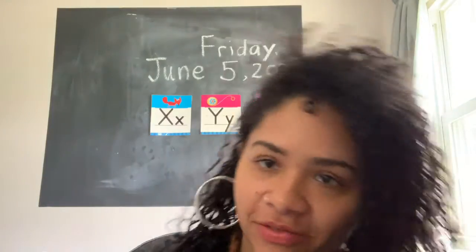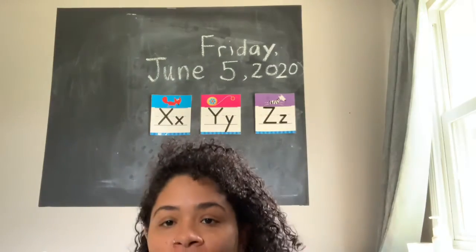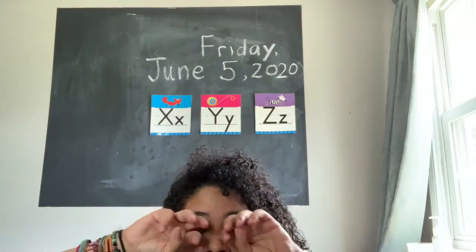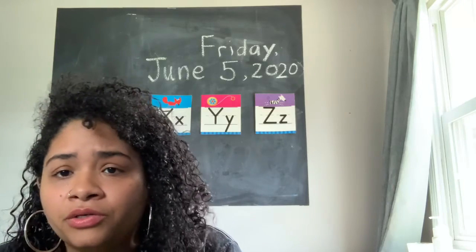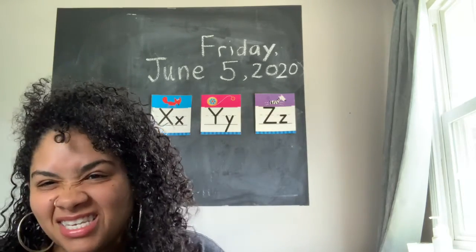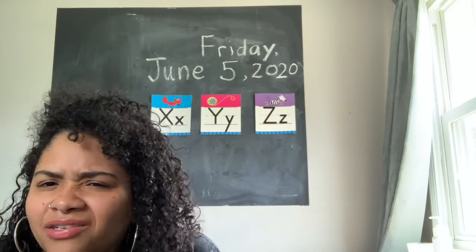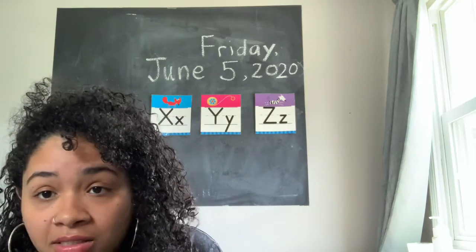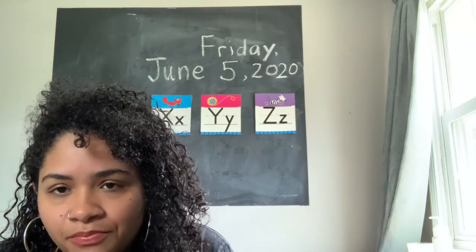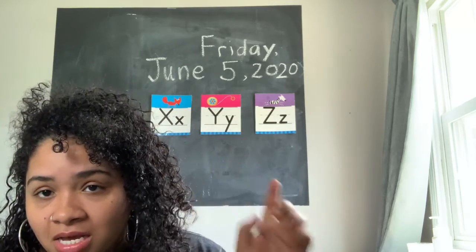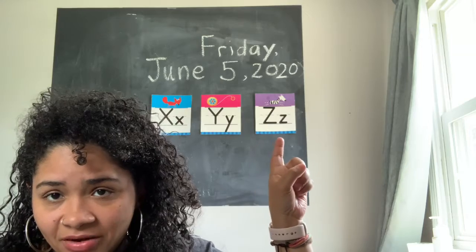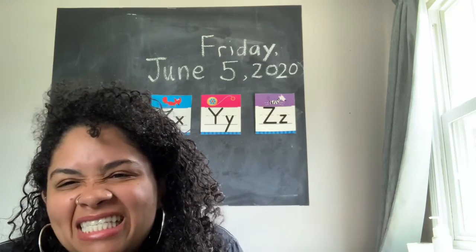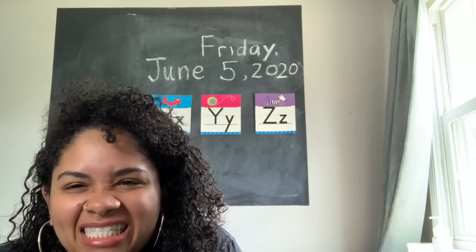Hi boys and girls, it's me, Miss Nicole. Today is Friday, June 5th, 2020, and today we're going to be learning three new letters. We are at the end of our alphabet. These last three letters are X, which makes a sound — there are not many letters that start with X, so they use a picture of a fox, which ends with X. This letter is Y, which makes a yeah sound like yo-yo. And this letter is Z, which makes a sound like zebra.